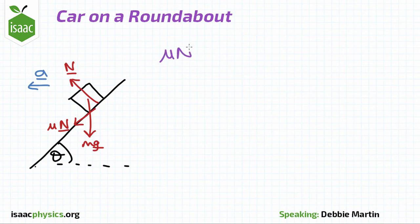Resolving vertically, we find that mu n sin theta plus mg equals n cos theta.